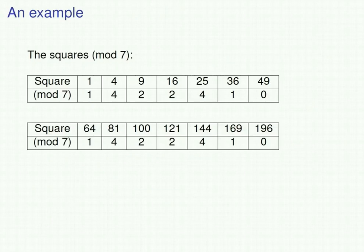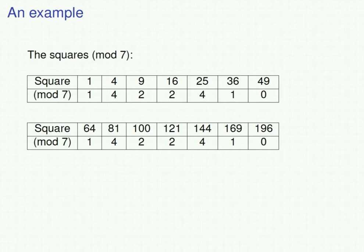Here I've listed the first 14 squares and their remainders upon division by 7. Reading across the first table: the remainder of 1 upon division by 7 is 1; the remainder of 4 is 4; 9 equals 7 plus 2, so the remainder of 9 divided by 7 is 2; 16 is 14 plus 2, and 14 is a multiple of 7, so the remainder of 16 divided by 7 is 2; 25 equals 21 plus 4, and 21 is a multiple of 7, so the remainder is 4; 36 is 35 plus 1, and 35 is a multiple of 7, so 36 leaves remainder 1; and 49 is a multiple of 7, so its remainder is 0.